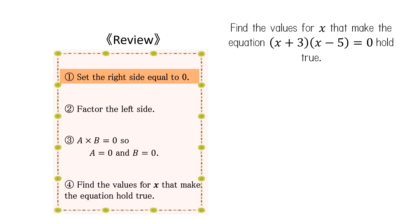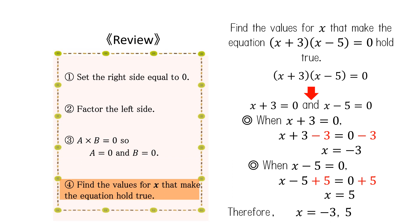Finally, let's review what we have learned. First, set the right-hand side of the equation to 0. Then, factor the left-hand side of the equation. If a times b equals 0, then a equals 0 and b equals 0. Solve for the values of x that make the equation hold true.